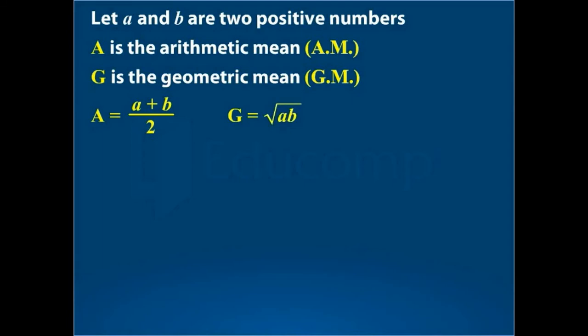Now to obtain the relationship between arithmetic mean and geometric mean, we subtract geometric mean from arithmetic mean. Thus we get A minus G is equal to A plus B over 2 minus square root of A into B.